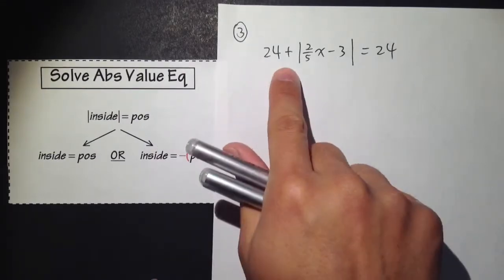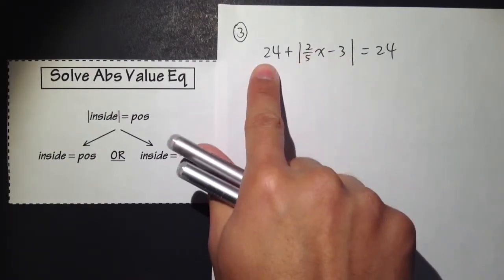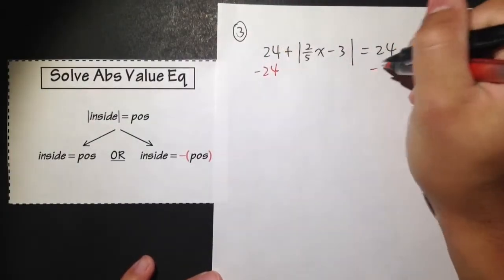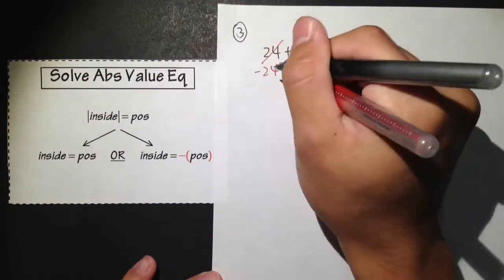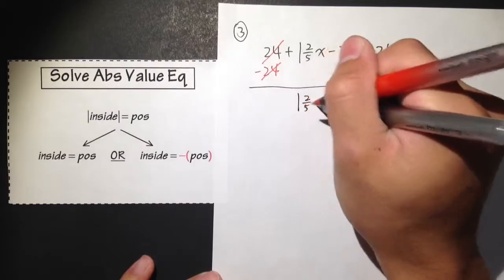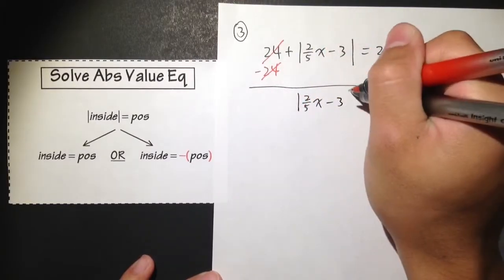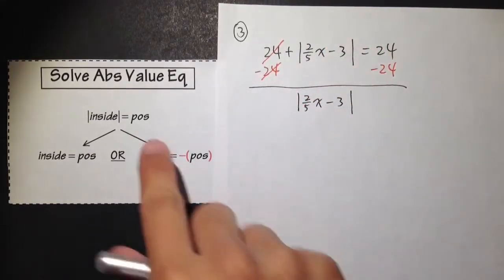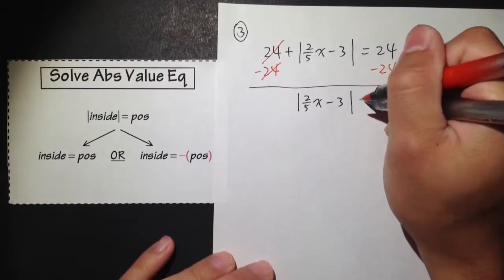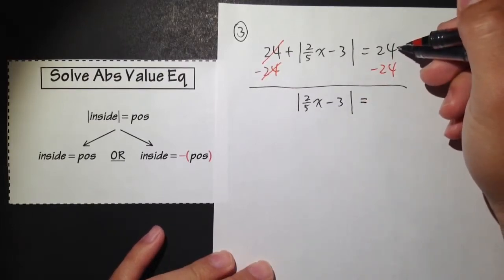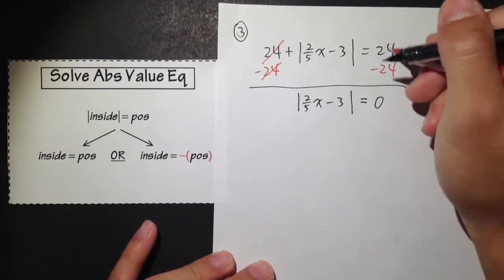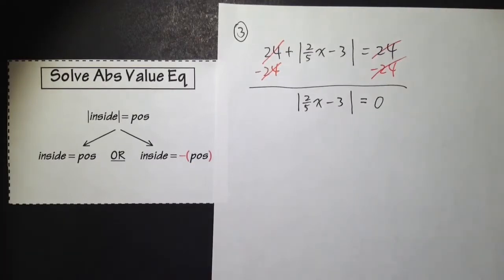We have 24 plus the absolute value. This 24 is positive, so we are going to subtract 24 on both sides first. On the left-hand side we will get the absolute value of 2 over 5x minus 3, and we still have to keep the absolute value because we haven't broken it down into two different equations yet. That equals 24 minus 24, which is 0.